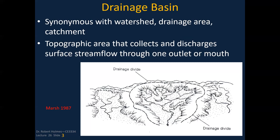A drainage basin is basically synonymous with the words watershed, drainage area, and catchment — those are all used interchangeably. If you look at this picture, you can see streams flowing through the system. If I'm interested in a particular outflow point, I want to know what part of this landscape contributes to that location where I'm monitoring — what is the watershed, what is the drainage area?